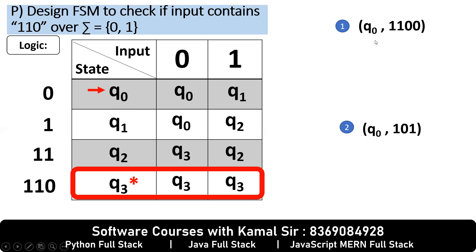So start Q0 on 1, check it. Q0 on 1 is Q1. Q1 on 1 is Q2. Q2 on 0 is Q3. And Q3 on 0 is Q3. And that is final - yes, valid.